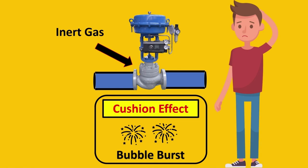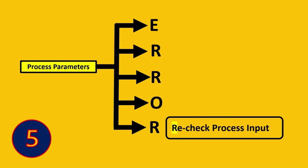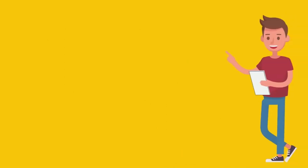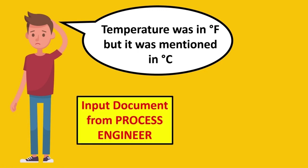The final one is my most personal example, which is R - recheck the process input. What happened with me was I was working on all the calculations and couldn't find a proper solution to cavitation. I went to the process department to ask and realized the temperature had to be in degrees Fahrenheit, but by mistake it was mentioned in degrees Celsius. If you're not able to find solutions to cavitation, just check if the input document from process is correct - all the process parameters, pressure drop, temperature, etc. Maybe that could solve your problem.